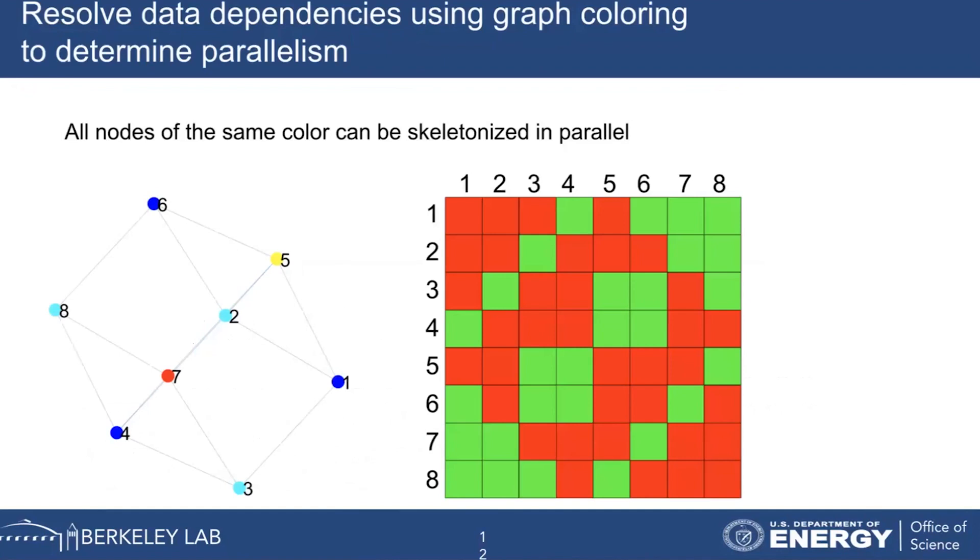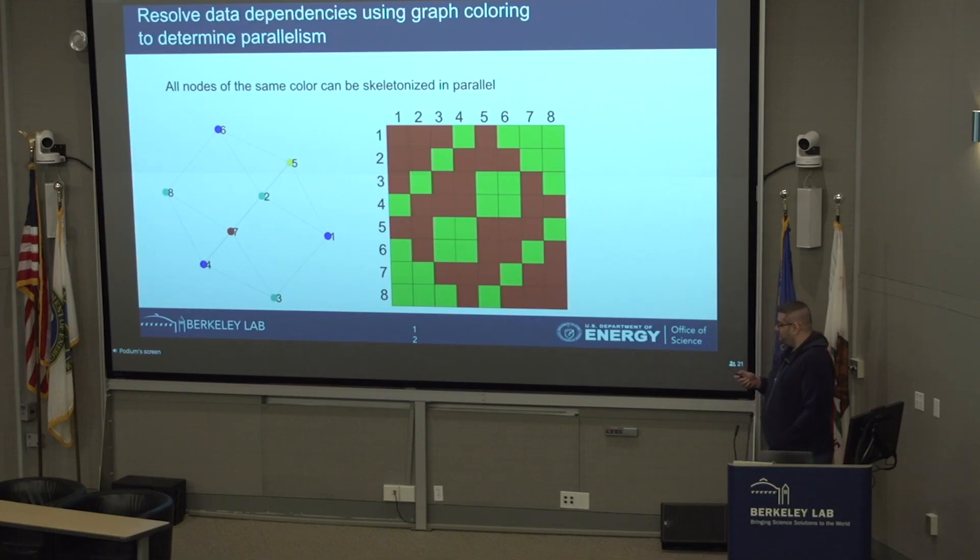Within the factorization routine there are going to be some data dependencies. To resolve those data dependencies and be able to send as much parallel work as we can within a level, we first pass it through a graph-coloring algorithm. We take the inadmissible portion of the matrix, take its sparsity graph, and pass it through a graph-coloring algorithm. So now all of the clusters within that have the same color can be factorized in parallel. The number of colors is limited by the sparsity constant, which is the maximum number of blocks within a row or column, and that doesn't grow with problem size, so we can be sure that we can have a lot of work as we increase the problem size.